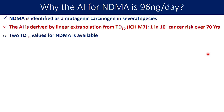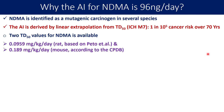If you look at the TD50 values for NDMA, you will find two different TD50s available. The first one is 0.0959 milligrams per kg per day, which is for the rat and based on the Peto et al. study. The second TD50 value for NDMA is 0.189 milligrams per kg per day, found in the mouse according to the CPDB database.